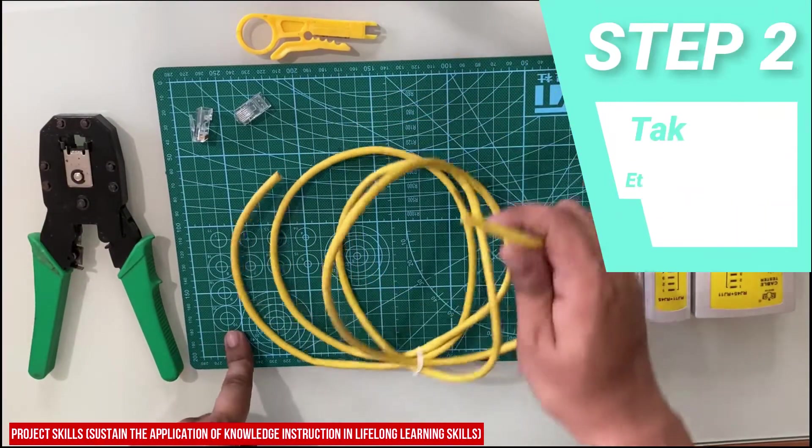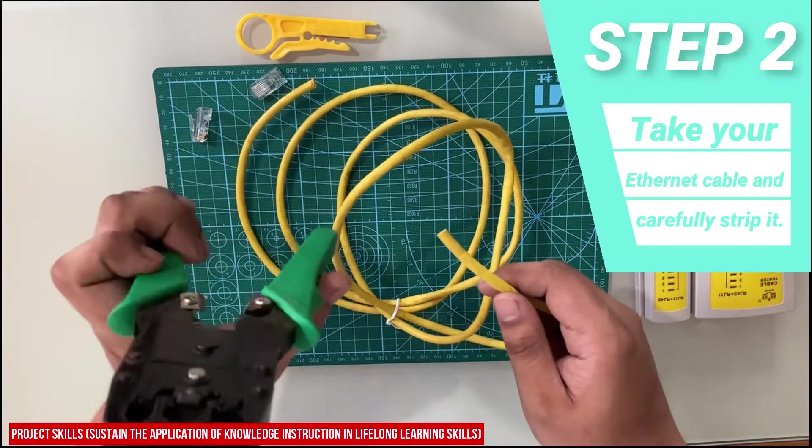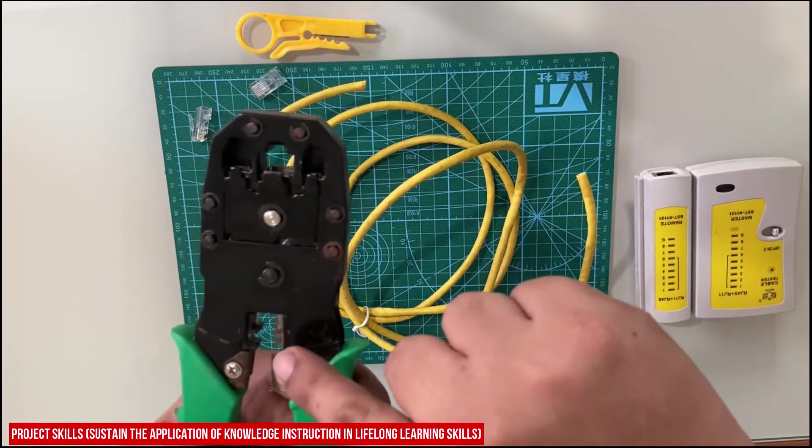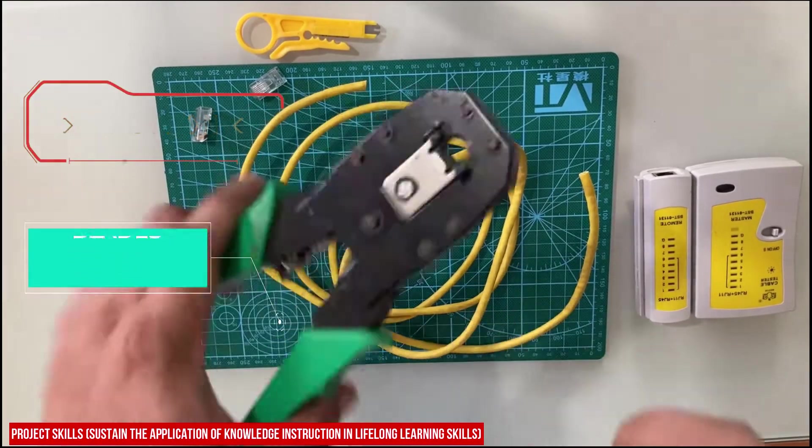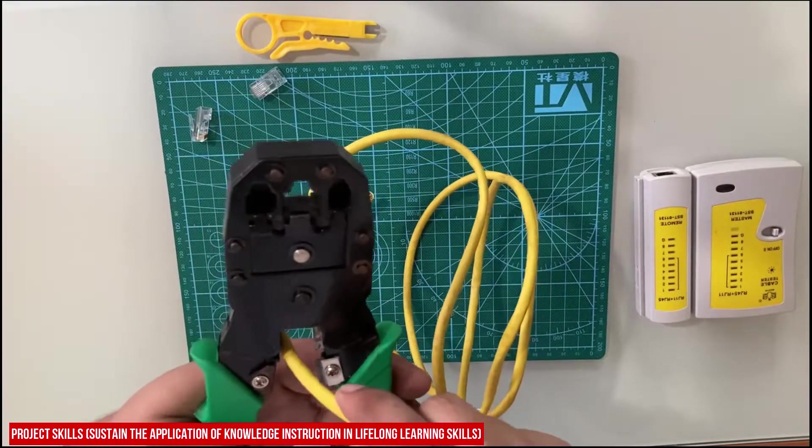The next step is we need to get our UTP cable and crimping tool. The crimping tool has a built-in blade that can cut and strip the cover of the wires. Having a crimping tool is like having a wire cutter and wire stripper at the same time. Just be careful in the use of the blades because it may cause injury.